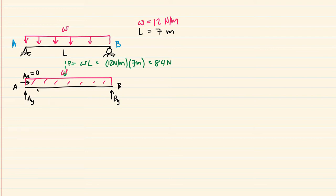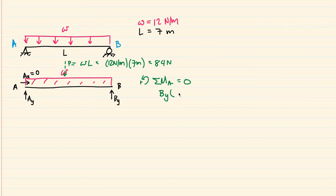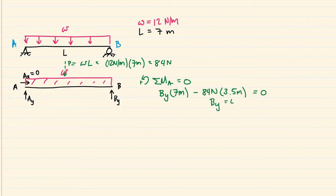We will draw the shear and moment diagram based on the actual loading and actual reactions — the actual W load and the actual AY and BY reactions. To find the reactions, we take the sum of moments at point A equal to zero. We have BY times its distance from A, which is 7 meters, minus 84 newtons times 3.5 meters — halfway between A and B — equals zero. Solving this gives BY equal to 42 newtons.